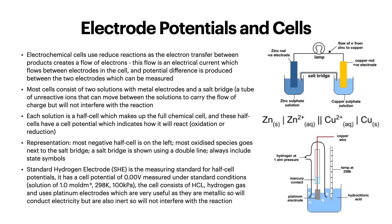A salt bridge is shown using a double line, always including state symbols. Then, the standard hydrogen electrode (SHE) is the measuring standard for half-cell potentials. It has a cell potential of 0.00 volts and is measured under standard conditions — 1 mol dm⁻³, 298 K, and 100 kPa. The cell consists of hydrochloric acid, hydrogen gas, and uses platinum electrodes, which are metallic so they conduct electricity but also inert so they do not interfere with the reaction. You can see how the standard hydrogen electrode looks in that bottom diagram.